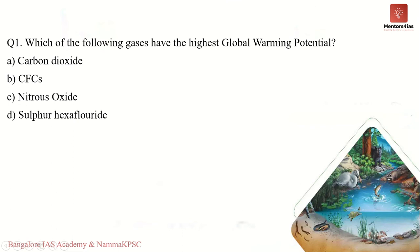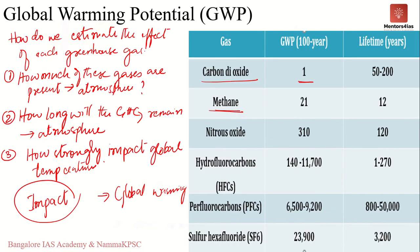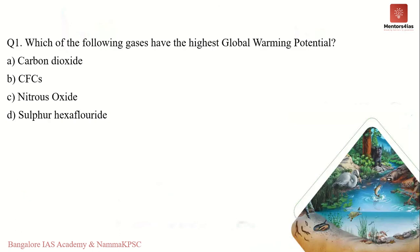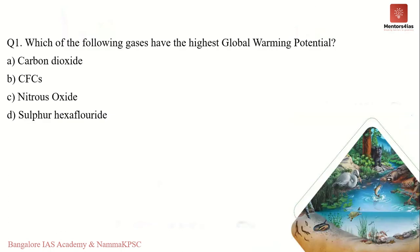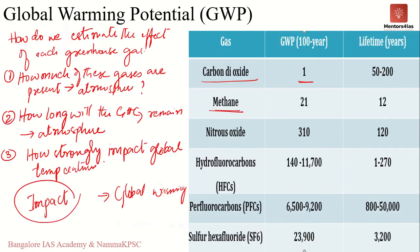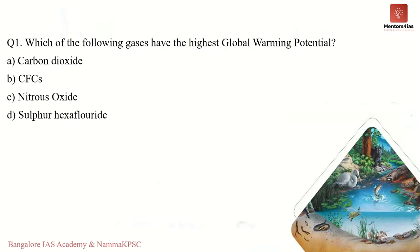Questions have been asked about global warming potential in examinations. For example: which of the following gases has the highest global warming potential? Based on the table, sulfur hexafluoride has a global warming potential of around 23,900 — that is 23,900 times more than carbon dioxide. Therefore, the correct answer is D, sulfur hexafluoride.